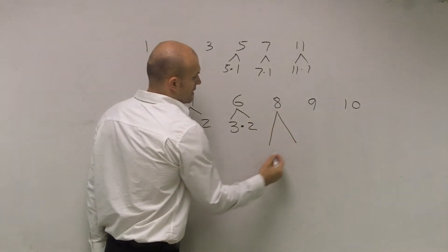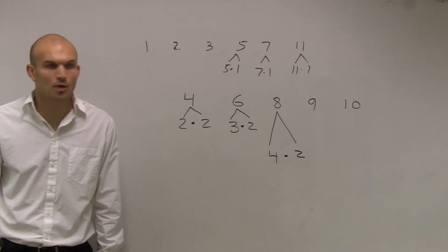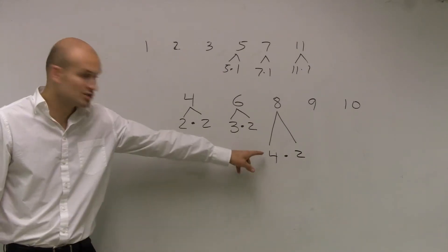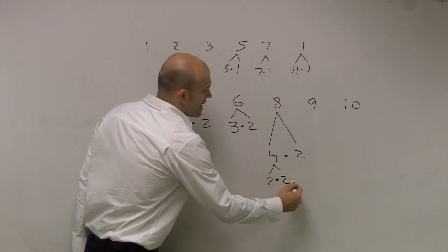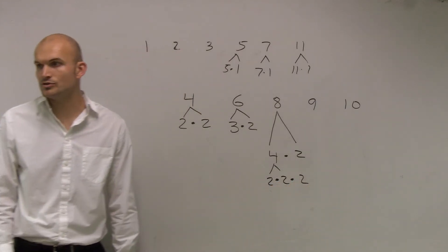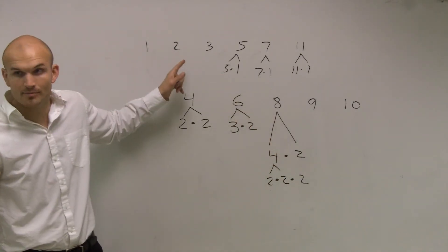if I rewrote it as 4 and 2, are 4 and 2 both prime numbers? No. You can still break down 4 again, right? So the prime factorization of 8 is going to be 2 times 2 times 2, because 2 is a prime number.